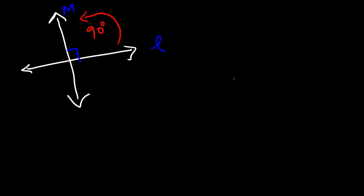Now let's say if line L has a slope of positive 3 over 4. What is the slope of line M? If you want to find the slope of a perpendicular line, you need to flip the fraction and change the sign. So it's going to be negative 4 over 3. Perpendicular lines have slopes that are the negative reciprocal of each other.